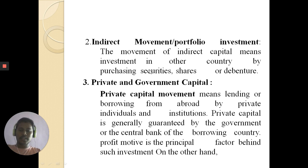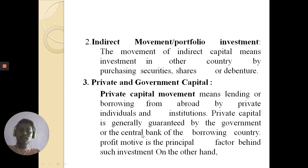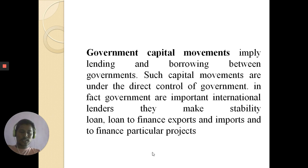The second type is indirect capital movement, also called portfolio investment. Indirect capital movement means investment in another country by purchasing securities, shares, or debentures. The third type is private and government capital. Private capital means lending or borrowing from abroad by private individuals and institutions. Private capital is generally guaranteed by the government or the central bank of the borrowing country, and its main motive is profit.